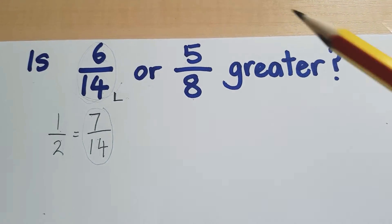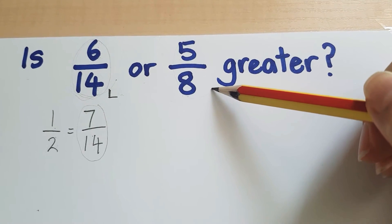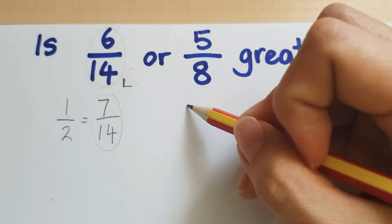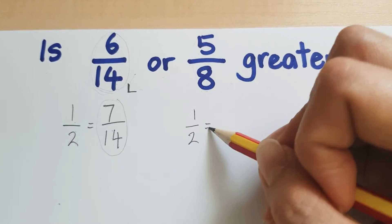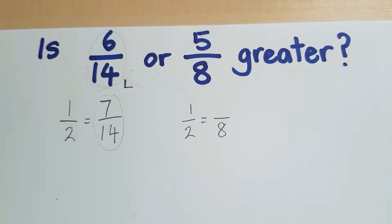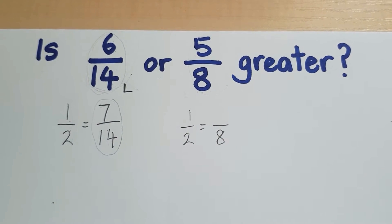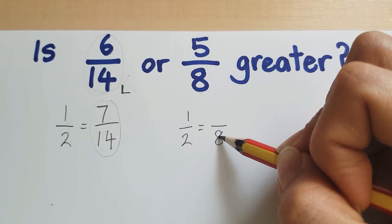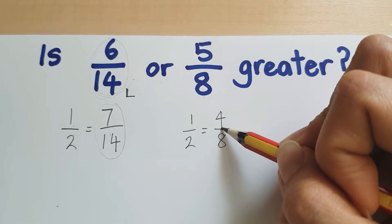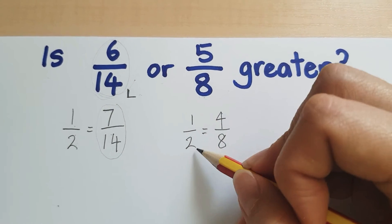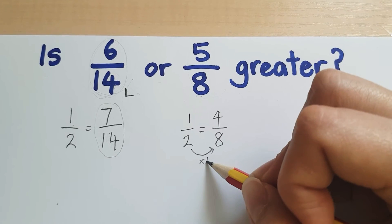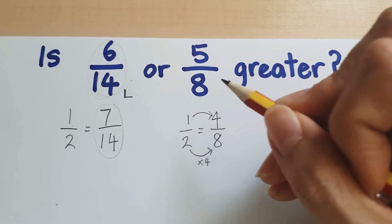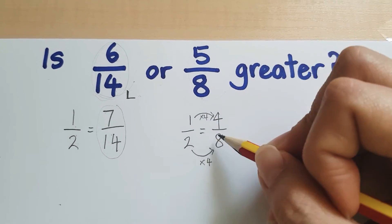Now let's move on to the second fraction, 5/8. If we are talking about eighths, what would be equivalent to half if we had 8 equal parts? If it's 8, half of it would mean 4. If you cannot see this, a good way would be to see that I have multiplied by 4 here and therefore times 4. These are equivalent.